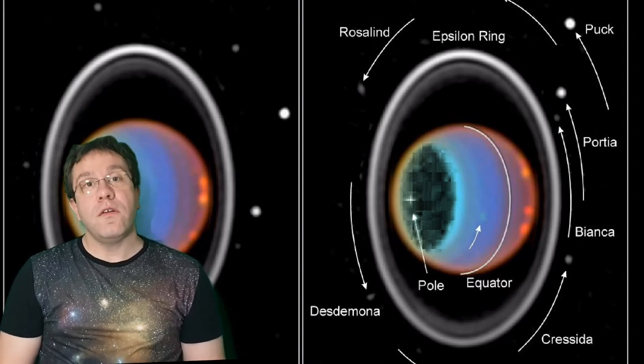And in the case of Uranus, the best explanation we can come up with is that shortly after Uranus formed, right at the end of its formation, it was in a big collision.